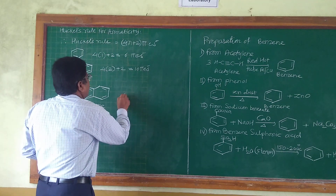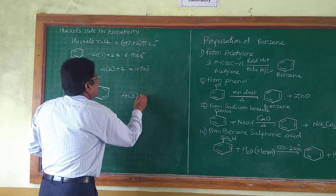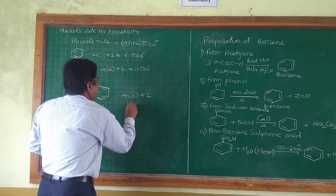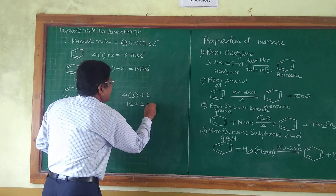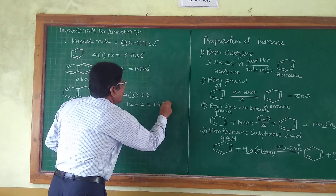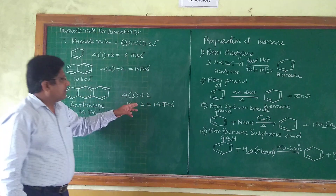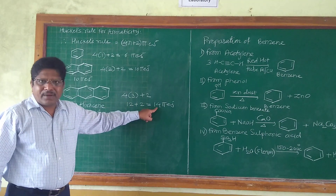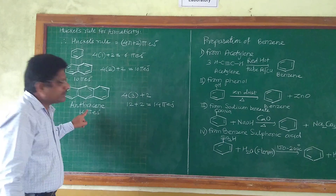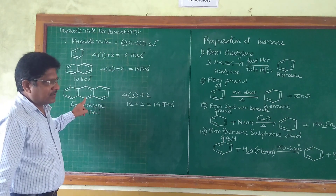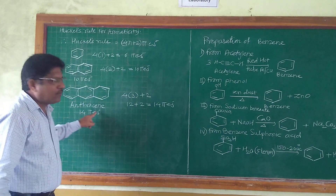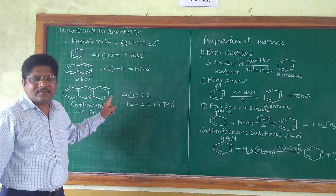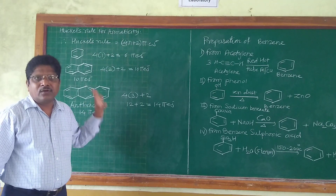Applying Hückel's rule for anthracene: 4 × 3 + 2, where N = 3. 4 × 3 = 12 + 2 = 14 pi electrons. According to Hückel's rule, we calculated 14 pi electrons, and in the actual structure we also have 14 pi electrons. Therefore, we can say that anthracene obeys Hückel's rule.